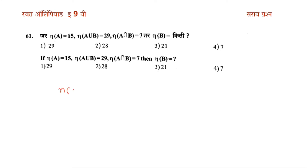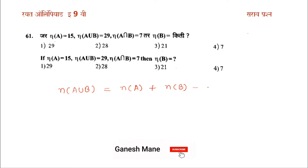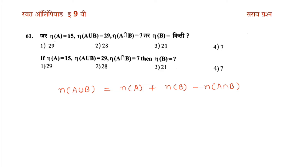There is a relation: N of A union B means that A union B is equal to N of A plus N of B minus N of A intersection B.